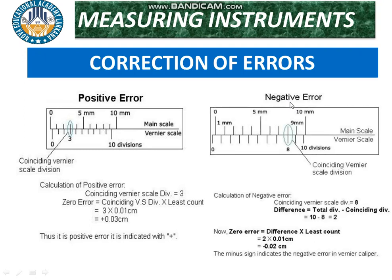Dear students, yesterday we discussed the Vernier Caliper — an instrument used to measure length, diameter, radius, capacity, or depth of an object with great accuracy. We also determined the least count of the Vernier Caliper: 0.1 millimeter.